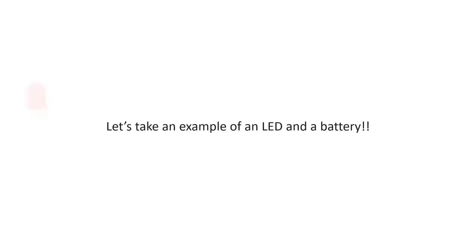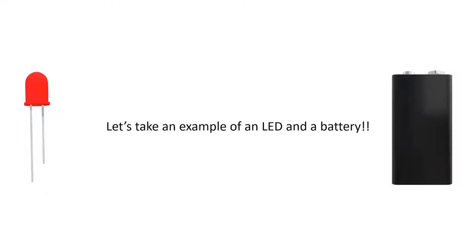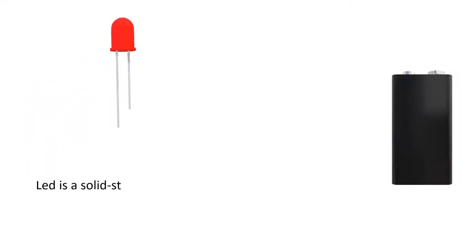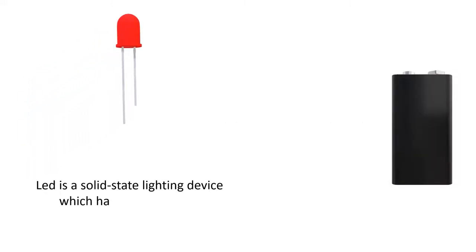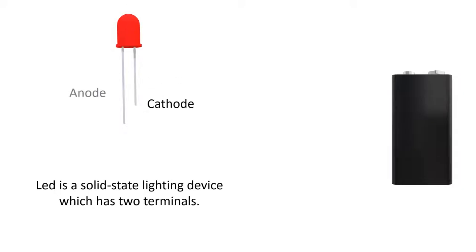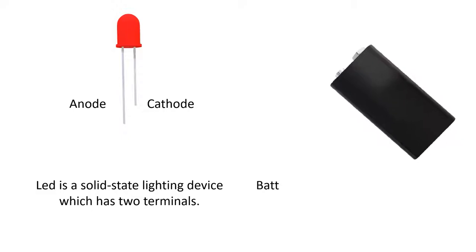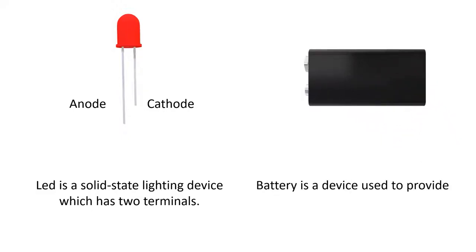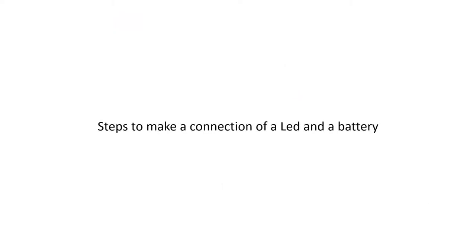Let's take an example of an LED and a battery. An LED is a solid state lighting device which has two terminals — cathode and anode. A battery is a device used to provide power to electrical devices. It also has two terminals, a positive and a negative. We need two components for this: an LED and a battery.